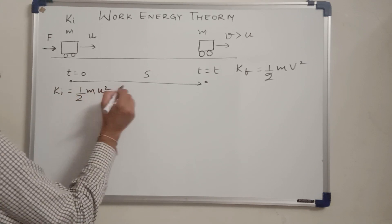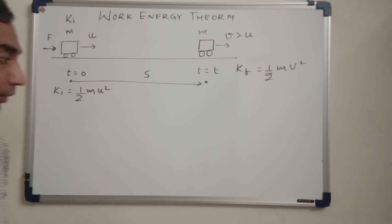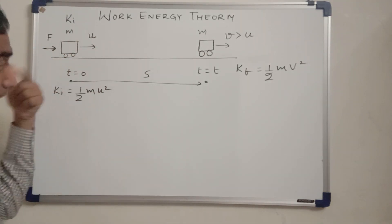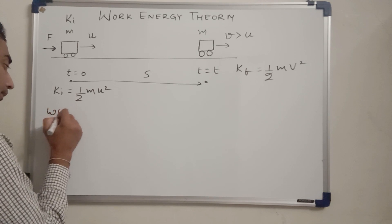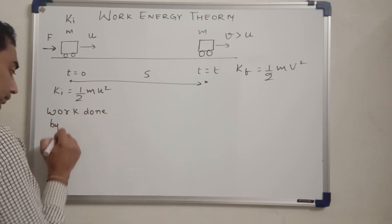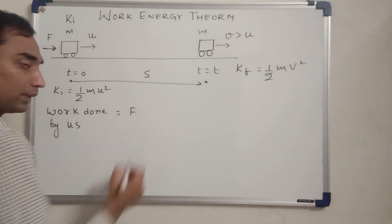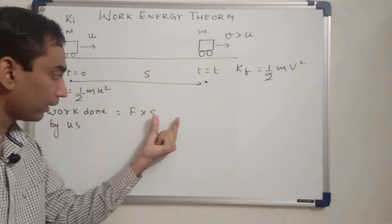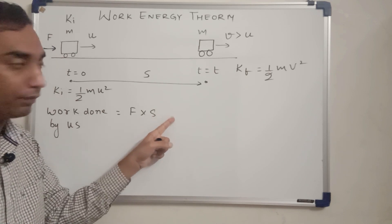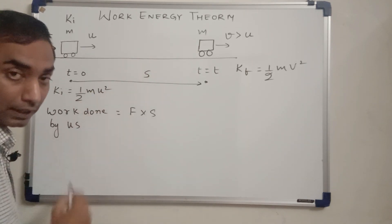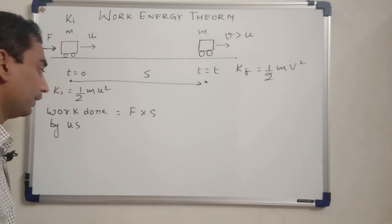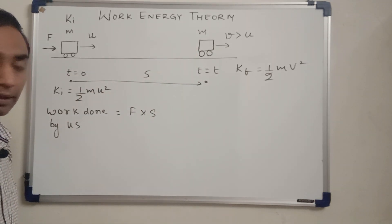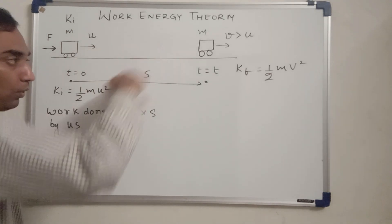Since we were exerting force from behind, we did some work and the work done by us was equal to force exerted multiplied by the displacement of the body. If you even want to apply cosθ, the cos of zero degree would be coming over here because the direction of force and displacement are same, so we need not write that.